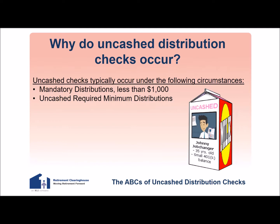Uncashed plan distributions: participants request distributions at their normal retirement age or required minimum distributions at age 70 and a half, yet they never cash their checks. Return checks: checks of any amount that are returned as undeliverable by the U.S. Postal Service. Unresponsive participants: checks of any amount that are requested but simply not acted upon by the participant.